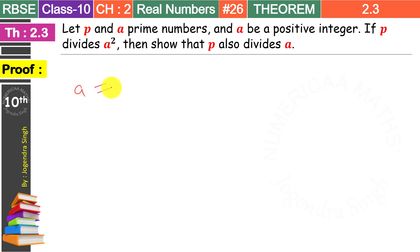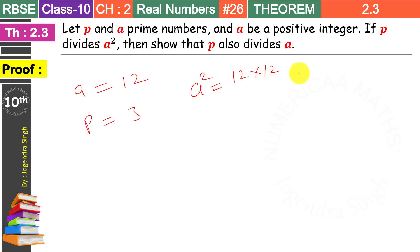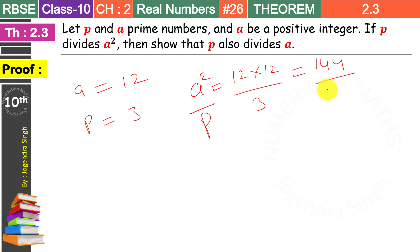So let us understand this. Suppose we take a number A, and let A equal to 12, and our P we take as 3. So A square means 12 into 12, which is 144. Now when P is dividing A square, that is 12 into 12, P equals 3. On the right side we have 144, write 3 below it.